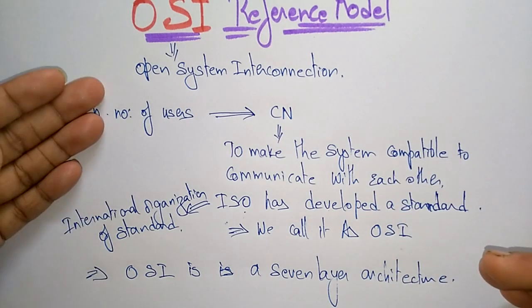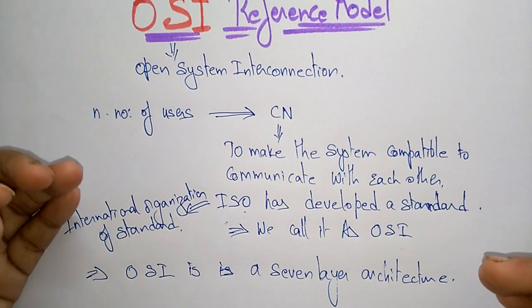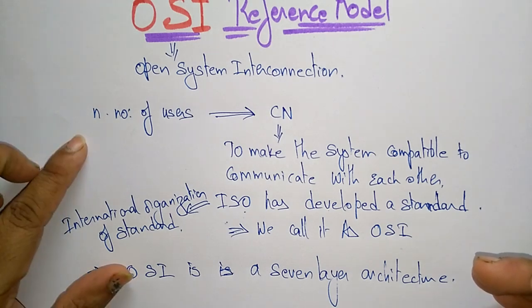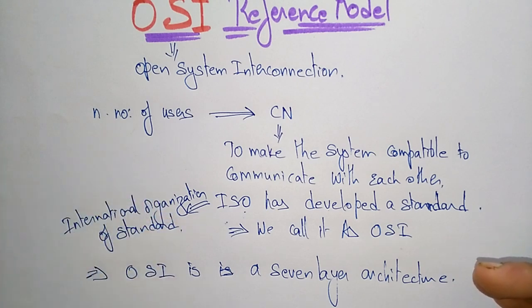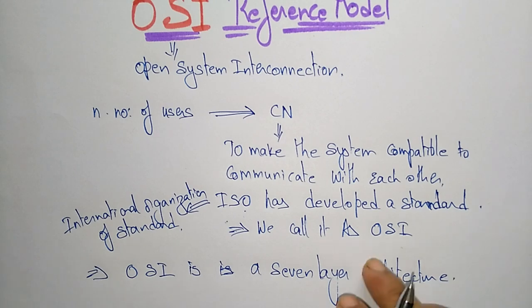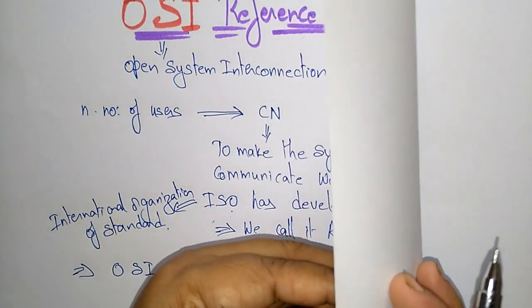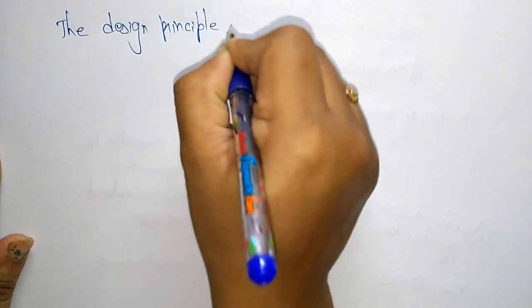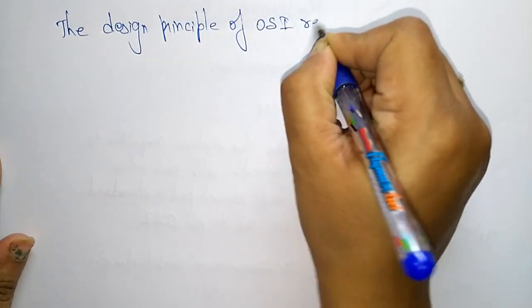The OSI model — Open System Interconnection — is a seven-layer architecture. That is the introduction: what is OSI, why it was introduced. ISO developed the OSI reference model to make systems compatible. Now let us see how we are going to design this OSI reference model and its seven layers.